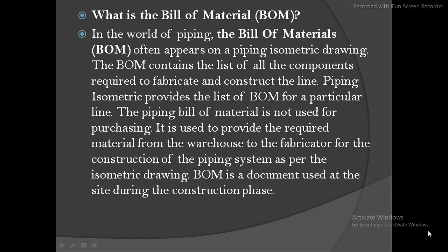On the right-hand side of all isometric drawings, whatever isometric is extracted, every component - pipe, elbow, valve - appears in the Bill of Material section. The piping Bill of Material is not used for purchasing. The BOM is not used for purchasing; the MTO is used for purchasing a product. The piping Bill of Material is used to provide the required material from the warehouse.